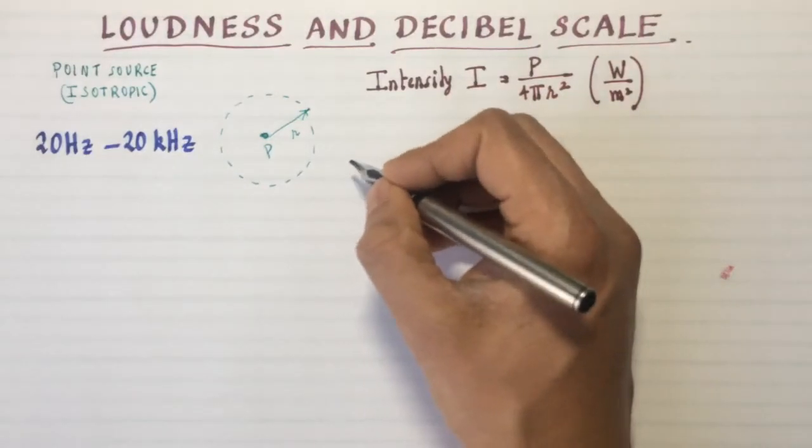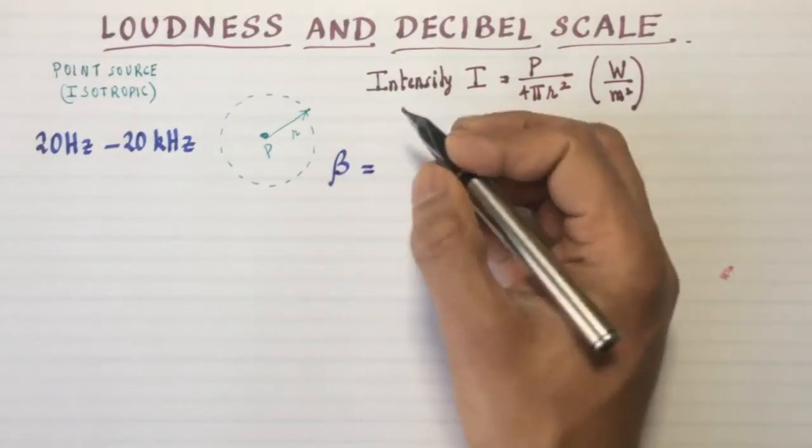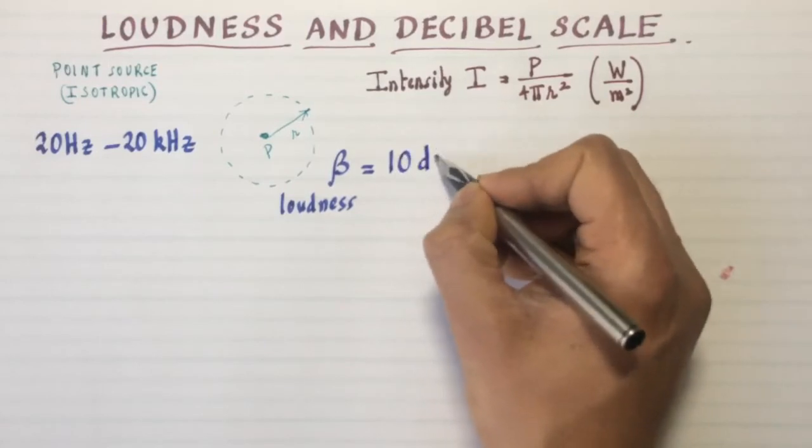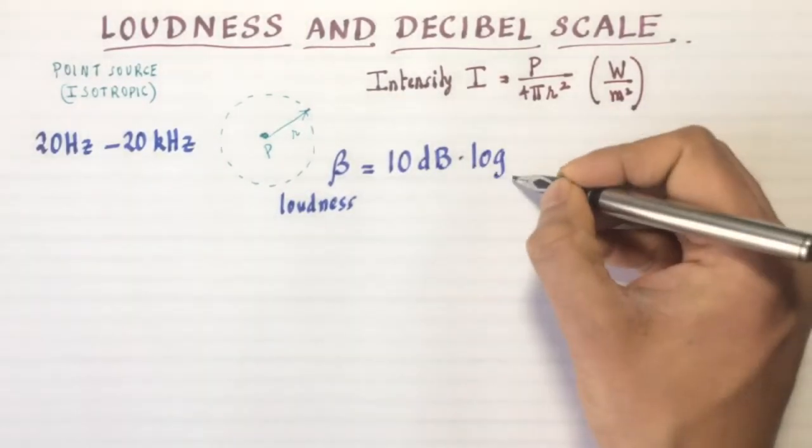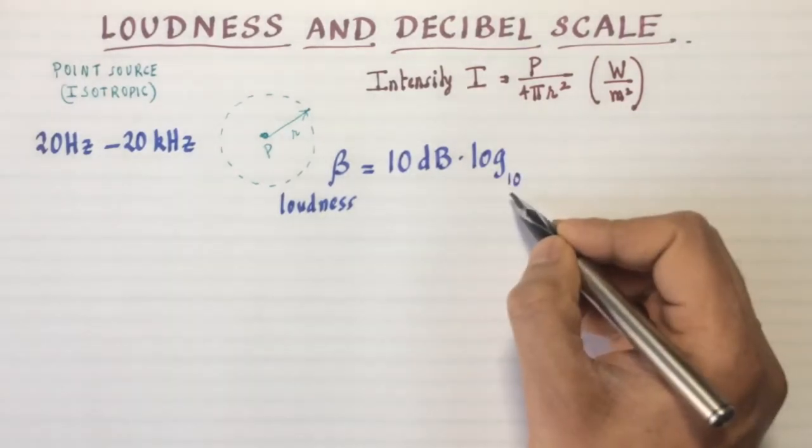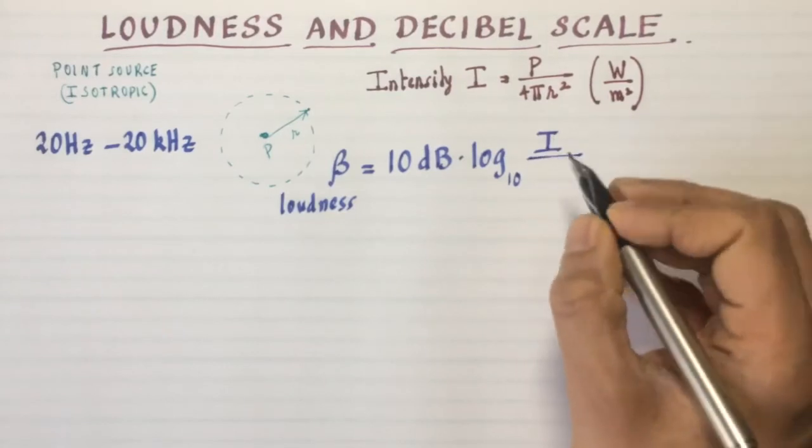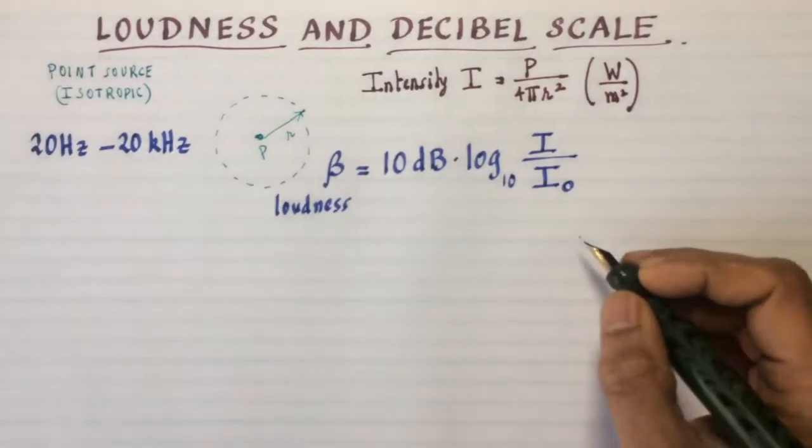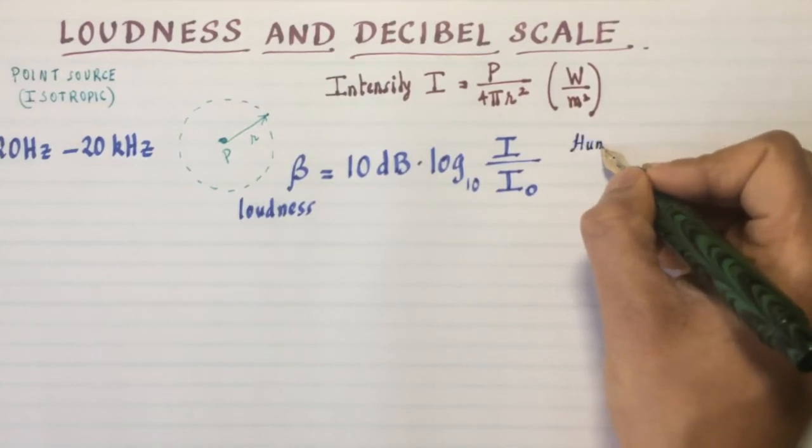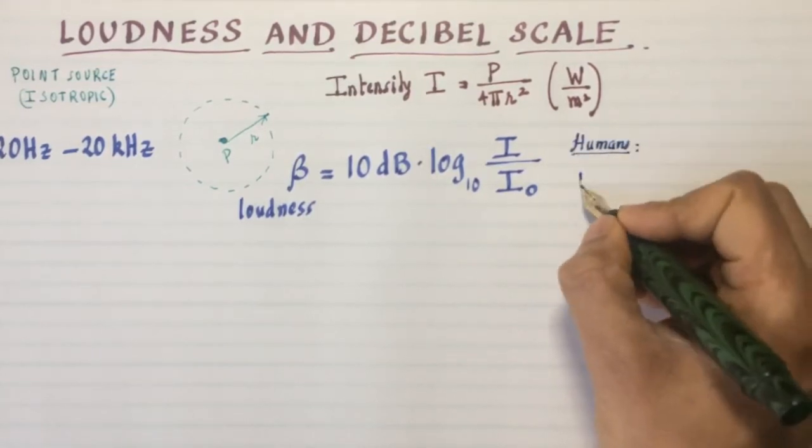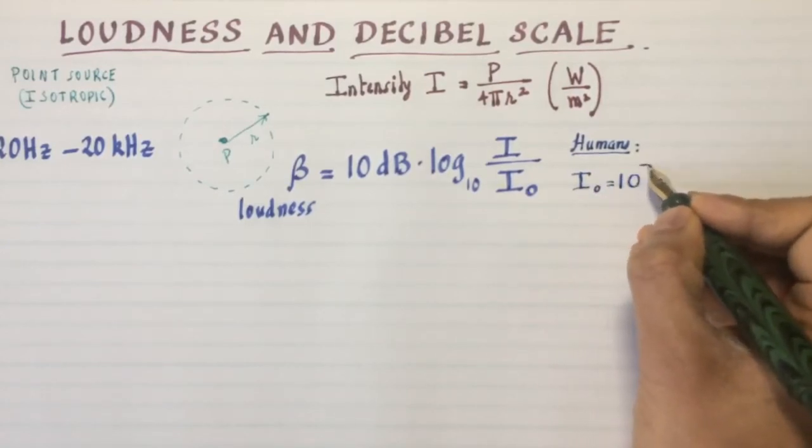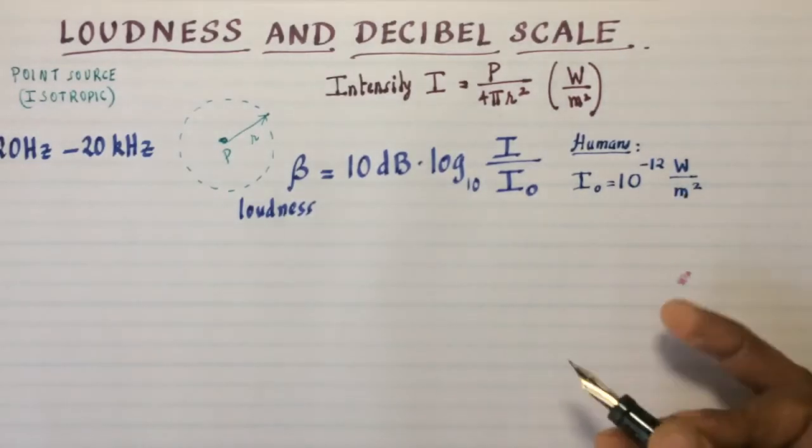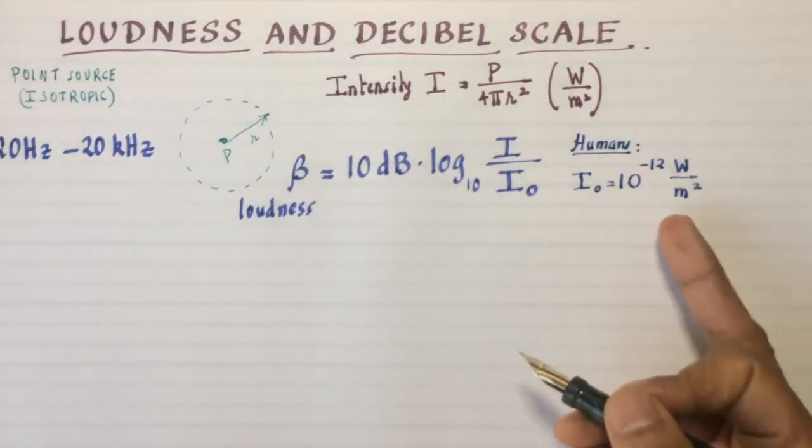Let me write what that decibel definition is. The loudness β of sound is defined as 10 decibels times the logarithm to base 10 of the intensity of sound you're hearing divided by what's called a threshold intensity. The threshold intensity is different for every animal. For human beings, that threshold is fixed at I₀ equals 10⁻¹² watts per square meter. Now that's an incredibly small number. It means your ear is so sensitive it can hear a trillionth of a watt per square meter.